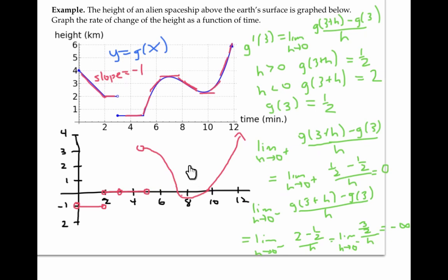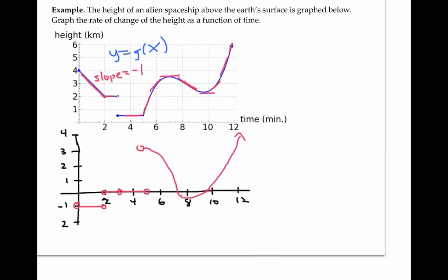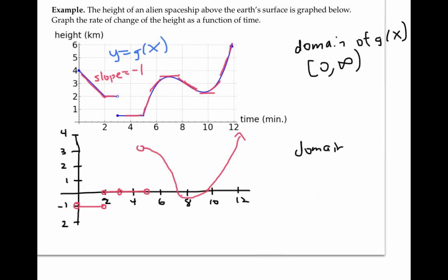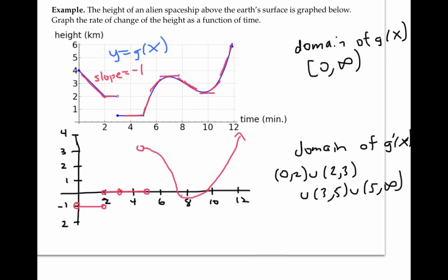So we've drawn a rough graph of the rate of change of the height of our alien spaceship as it comes closer to Earth, beams down to pick up earthlings, and then makes its escape up to the mothership. It's interesting to observe that the domain of the original function g of x is from zero to infinity, but the domain of g prime is somewhat smaller, going from zero to two, then from two to three, then from three to five, and finally from five to infinity — missing some places where the function originally existed.